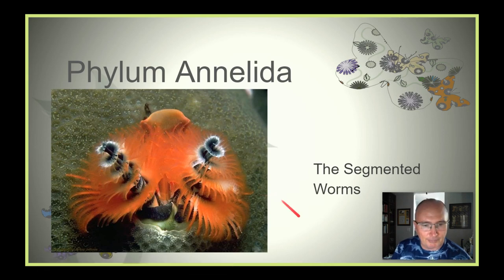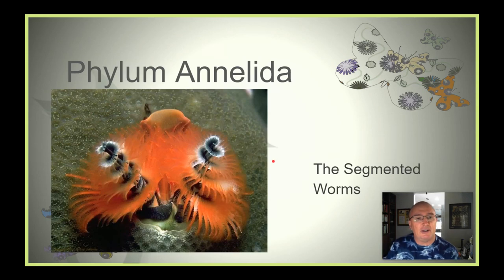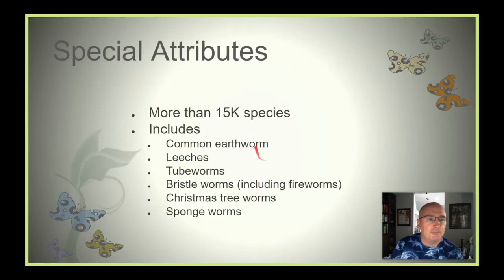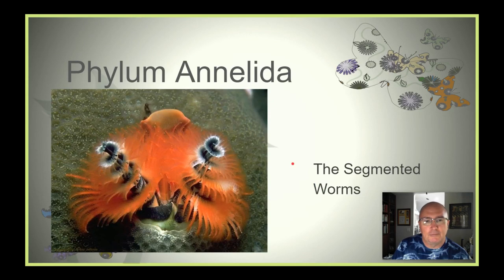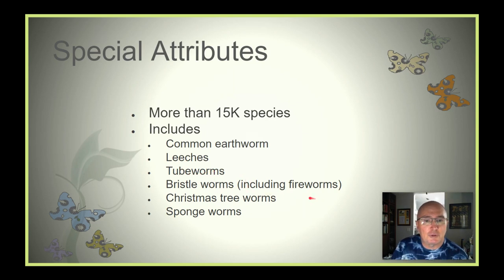This is the Christmas tree worm. More than 15,000 species are found in this group. It includes the common earthworm, leeches, tube worms, bristle worms including the fireworms which we'll talk about, Christmas tree worms like the picture we just saw, and even some worms called sponge worms.